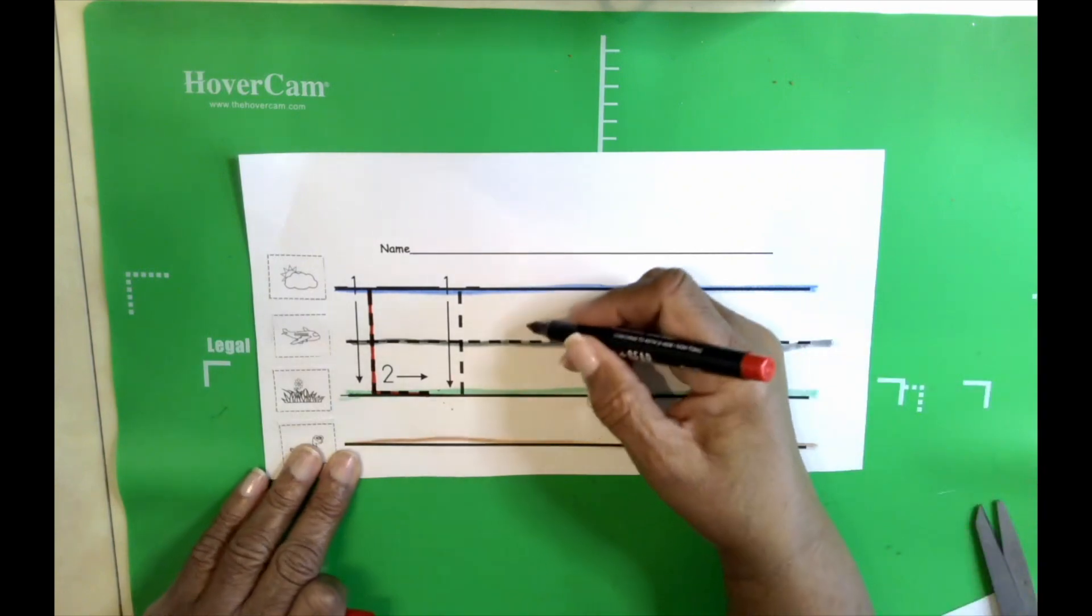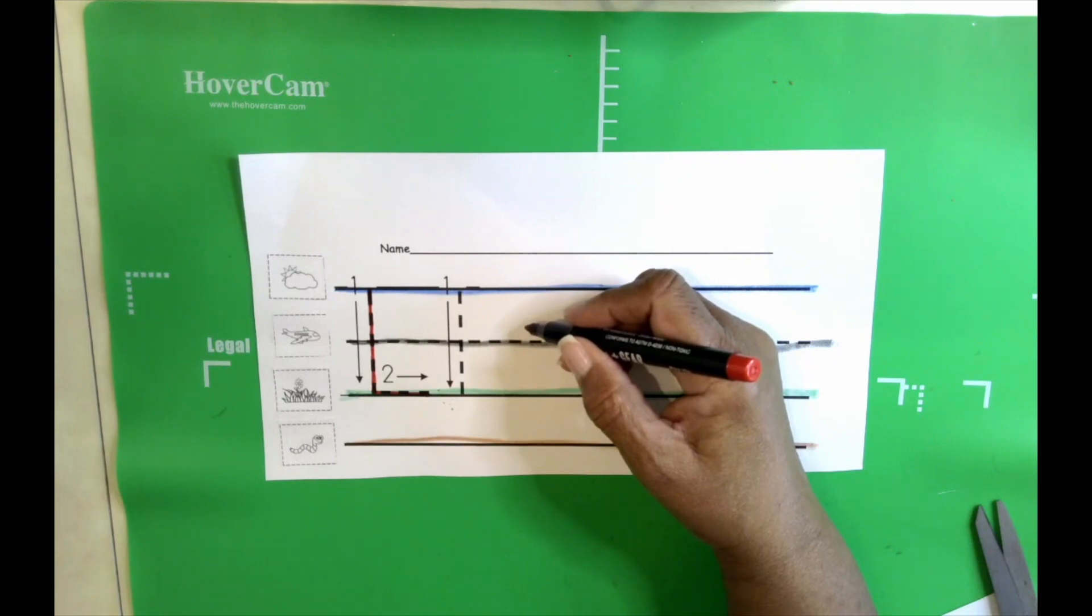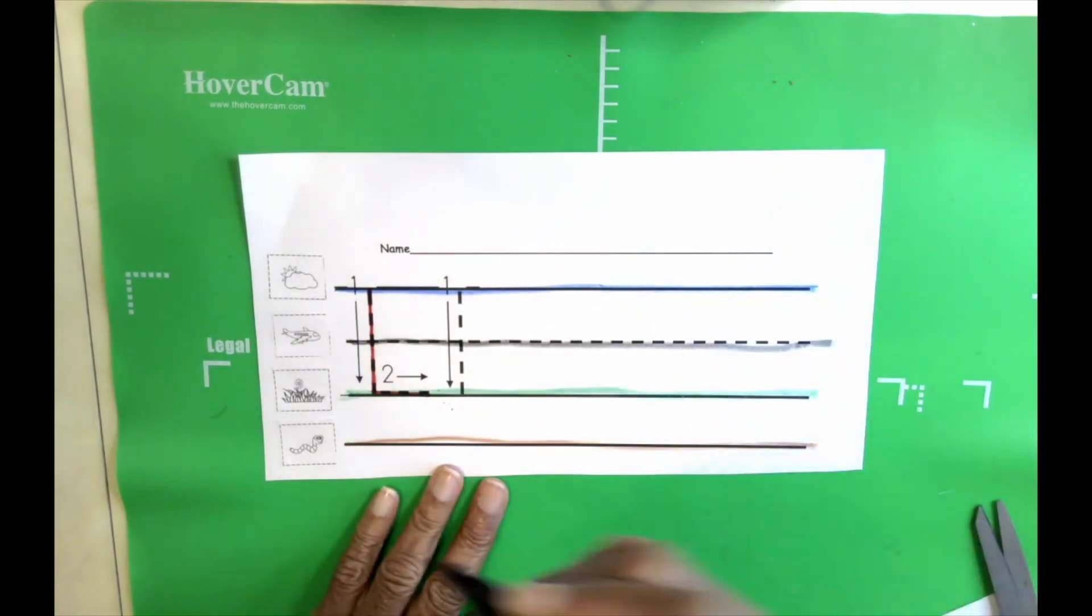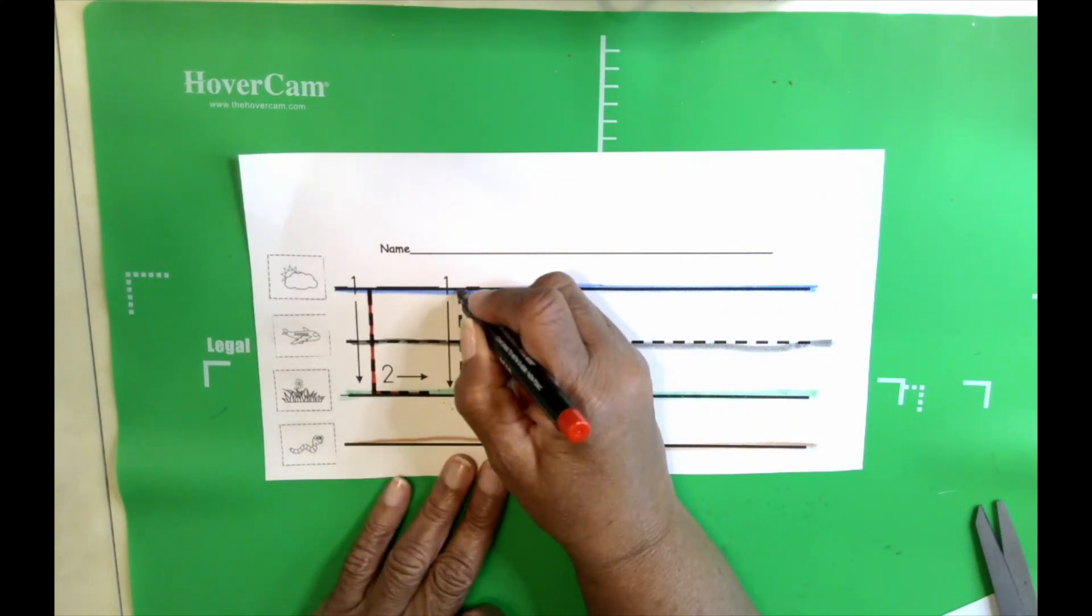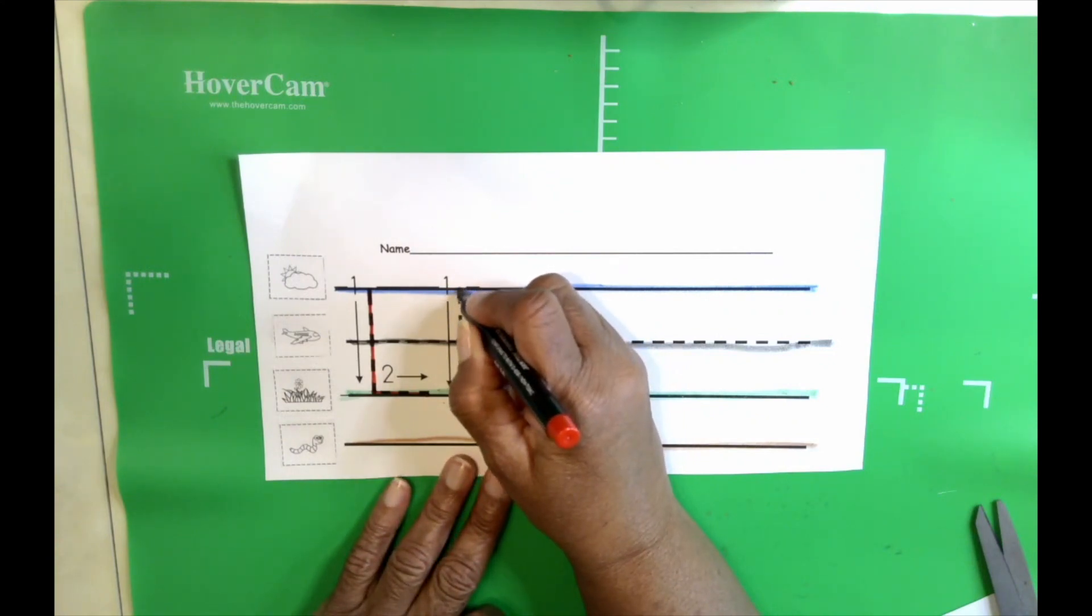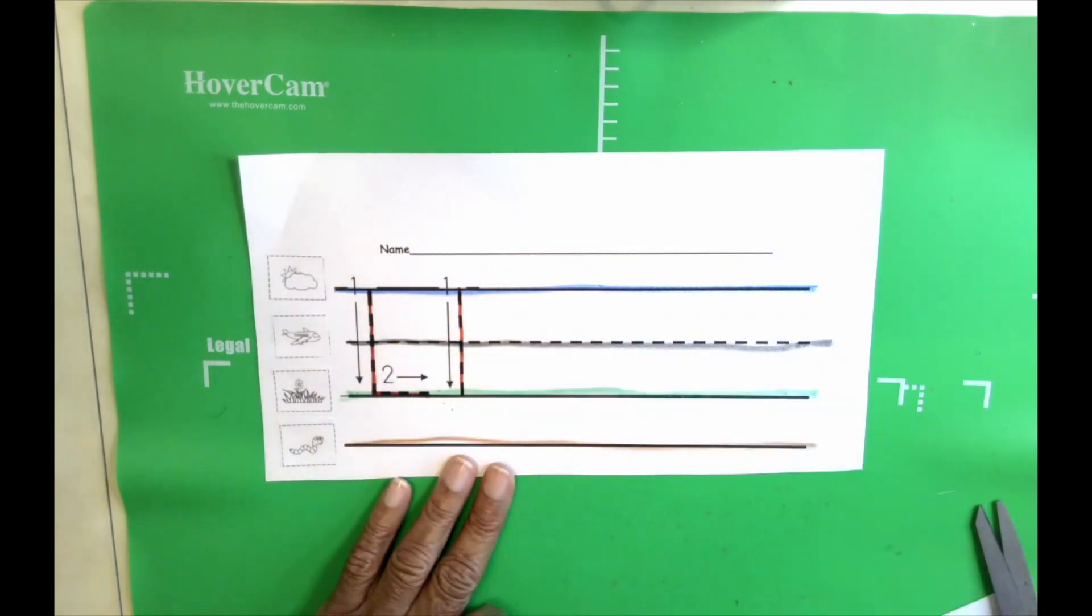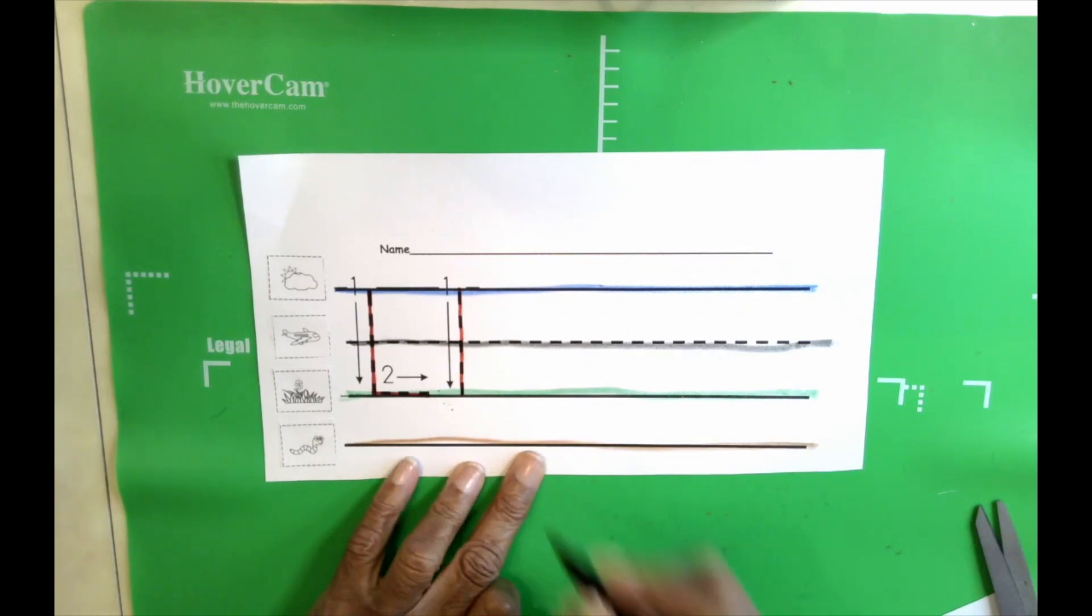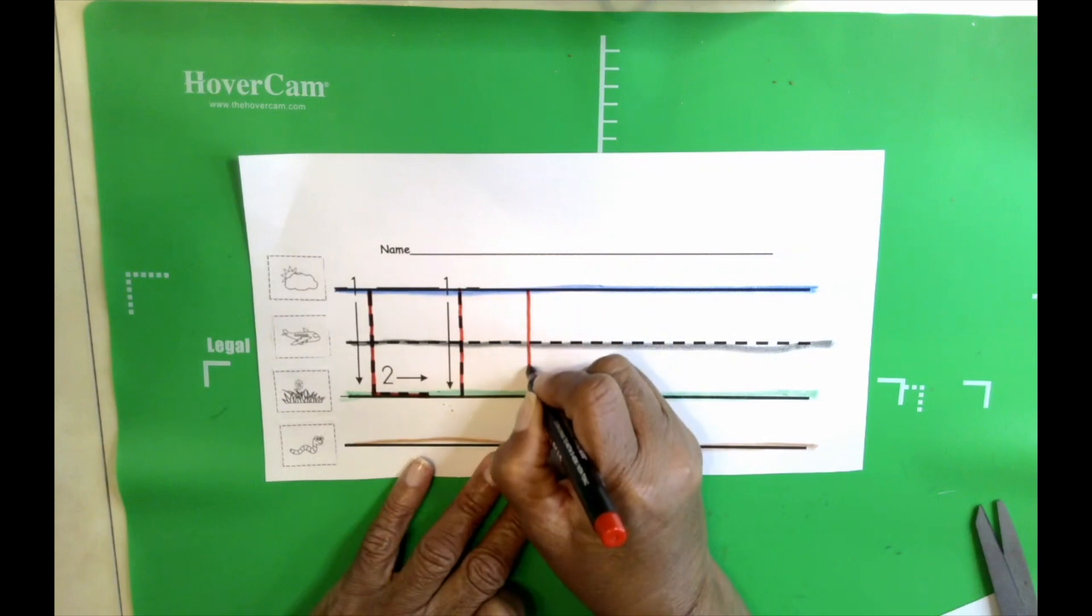Now, the lowercase L is just one line. And it's a skyline letter. Or a tall letter. Sometimes we call them tall letters. Okay. So, skyline. All the way down to the grass line. And that's it. Easy peasy. Lemon squeezy. Let's see if we can do it all by ourselves.